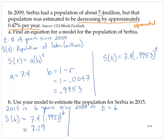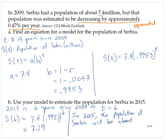Conclusion: In 2015, the population of Serbia will be about 7.19 million.